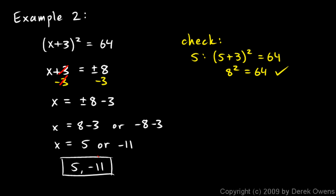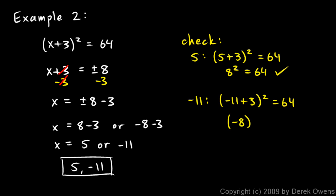Let's also check x equals negative 11: plug it in to get negative 11 plus 3, squared, equals 64. Negative 11 plus 3 is negative 8, and negative 8 squared equals 64 — negative 8 times negative 8 is 64. So both solutions check out and satisfy the original equation. Those are the solutions, and the only two solutions.